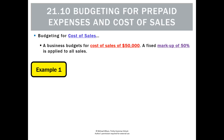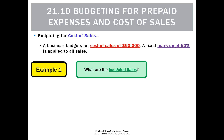Let's look at cost of sales. Cost of sales can be a tricky one. We've used a formula to figure it out in unit three and we're going to use the same formula — it's just a question of which number we don't have. In this case, the business budgets for cost of sales of $50,000 and a fixed markup of 50% is applied to all sales. Let's budget for our sales.